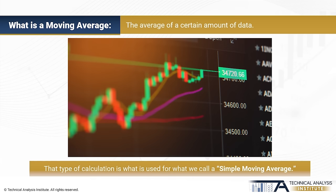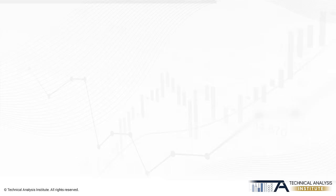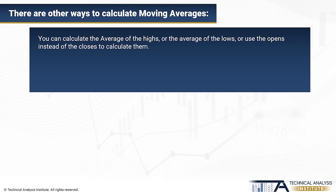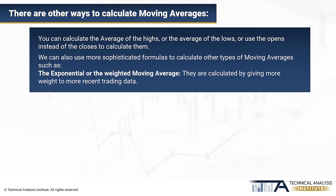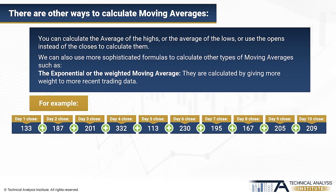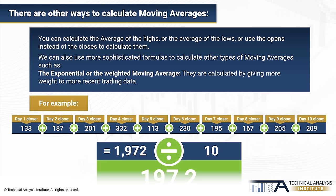That type of calculation is what is used for what we call a simple moving average. But there are other ways to calculate moving averages. For instance, you can calculate the average of the highs, the average of the lows, or use the opens instead of the closes. We can also use more sophisticated formulas to calculate other types of moving averages, such as the exponential or the weighted moving averages. In a 10-day simple moving average, we give the same importance to all days — we add all the closes and divide by the number of days. That means the last day has the same weight as the first day, so the closing of 10 days ago has the same importance as the closing of yesterday.